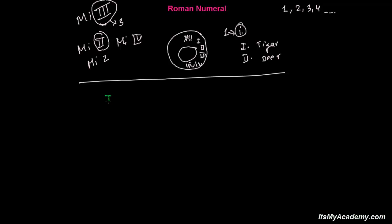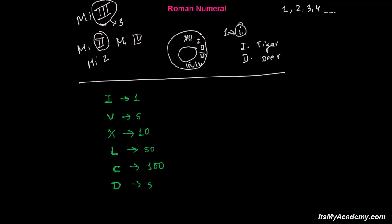The first symbol is I — this I represents one. And then V — this V represents five, keep in mind. Similarly X — X represents 10. After that you need to learn L — this capital L represents 50. And then C — this C represents 100. And then D — this D represents 500. And after that M — this M represents 1000.